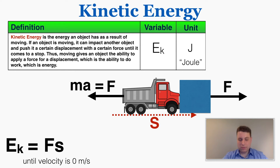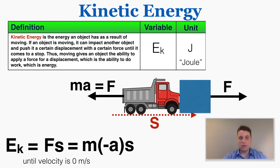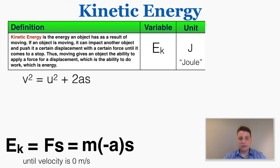Going back to the kinetic energy formula, I'll rewrite it using this new expression for force. Because the force on the truck points opposite to the displacement, I'll consider the acceleration to be negative, giving m times negative a times s. Then I'll refer to the kinematics equation v² = u² + 2as. Since I know s and a, and the final velocity of the truck is zero, I can rewrite that equation accordingly.